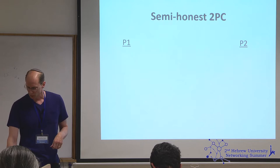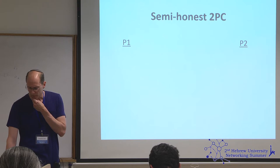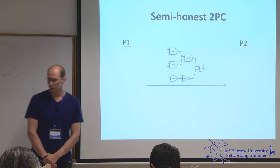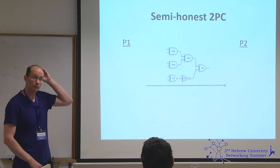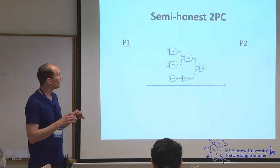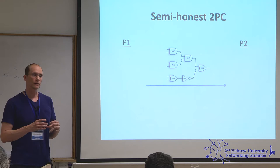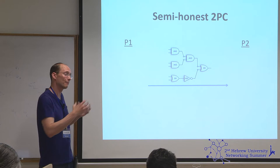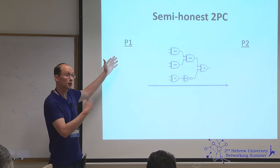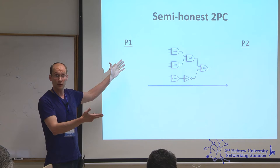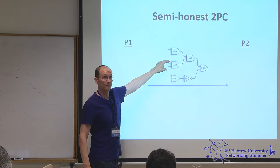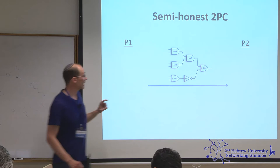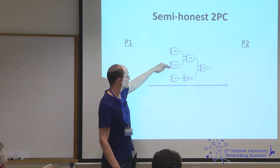There's a magical tool called a garbled circuit. What it allows you to do is take a boolean circuit for a function and replace it with a cryptographic object that allows one party — say P2 — to evaluate the circuit without learning any of the values on the intermediate wires. This maps nicely to secure two-party computation: P1 constructs a garbled version of the boolean circuit for the function the parties want to compute, embedding its own inputs into the input wires of the garbled circuit.